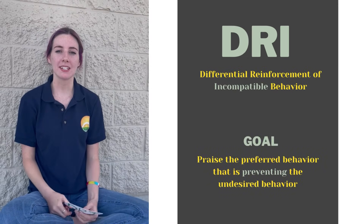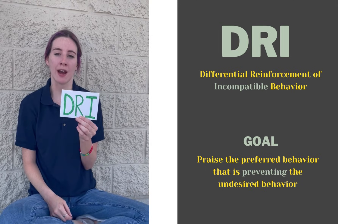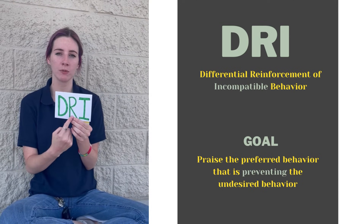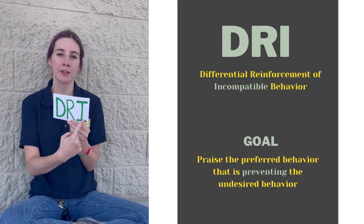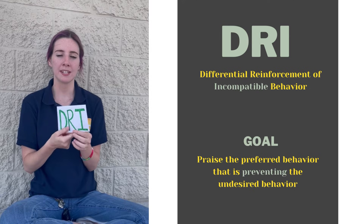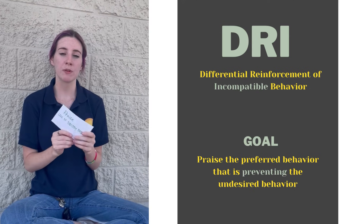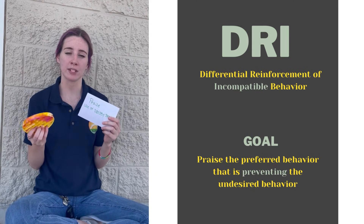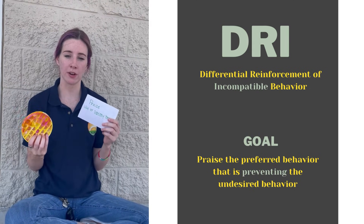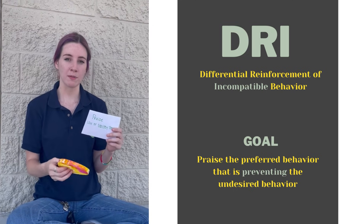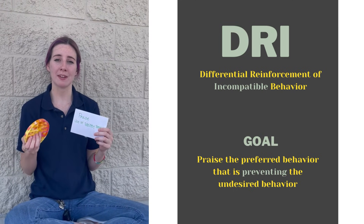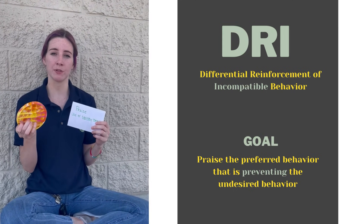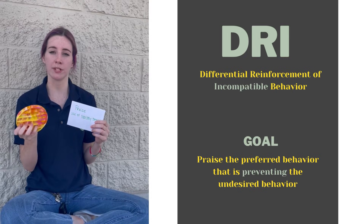Lastly, DRI is differential reinforcement of an incompatible behavior. One example we could use is using a squishy to prevent the aggressive behaviors from occurring. It would be incompatible because it's keeping their hands busy and they're unable to aggress while they're using the popper.